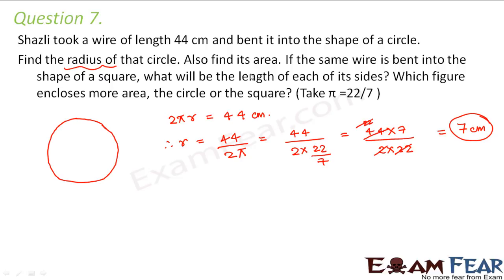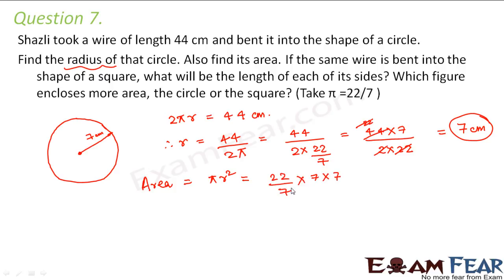Also find its area. If we know the radius is 7 centimeters, then area = πr² = (22/7) × 7 × 7. The 7s cancel, giving 22 × 7 = 154 centimeter square. So this is the area of the circle.